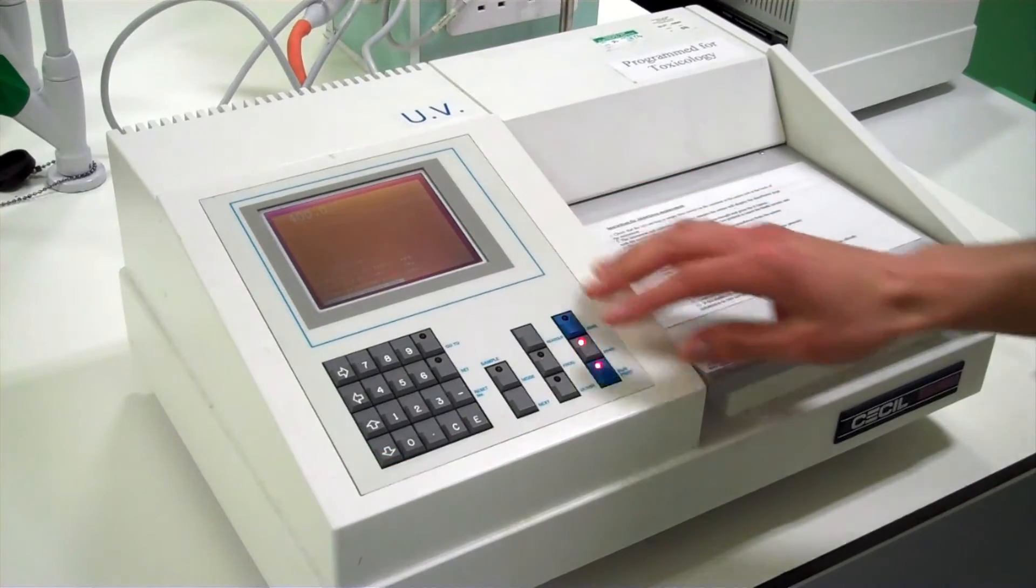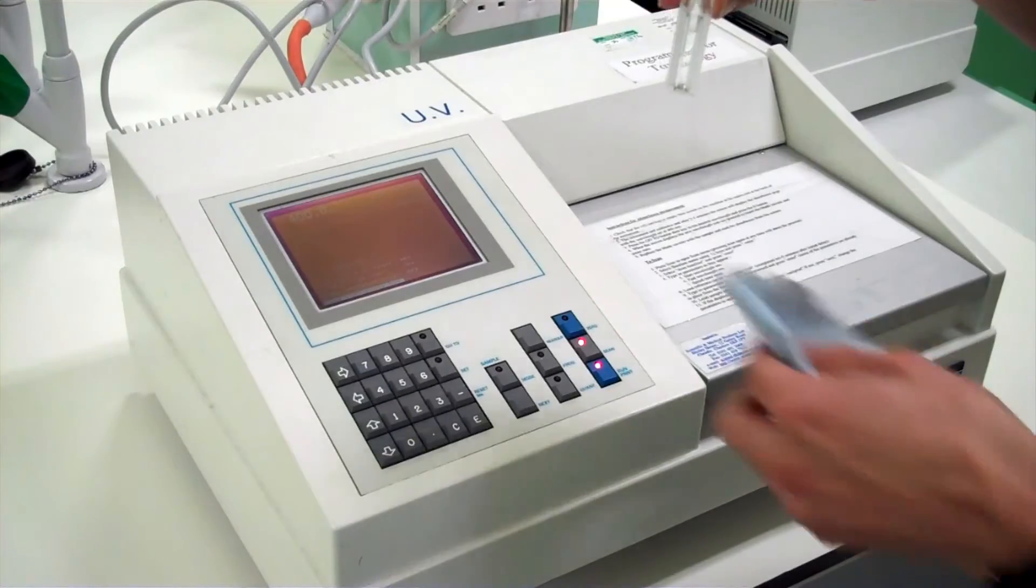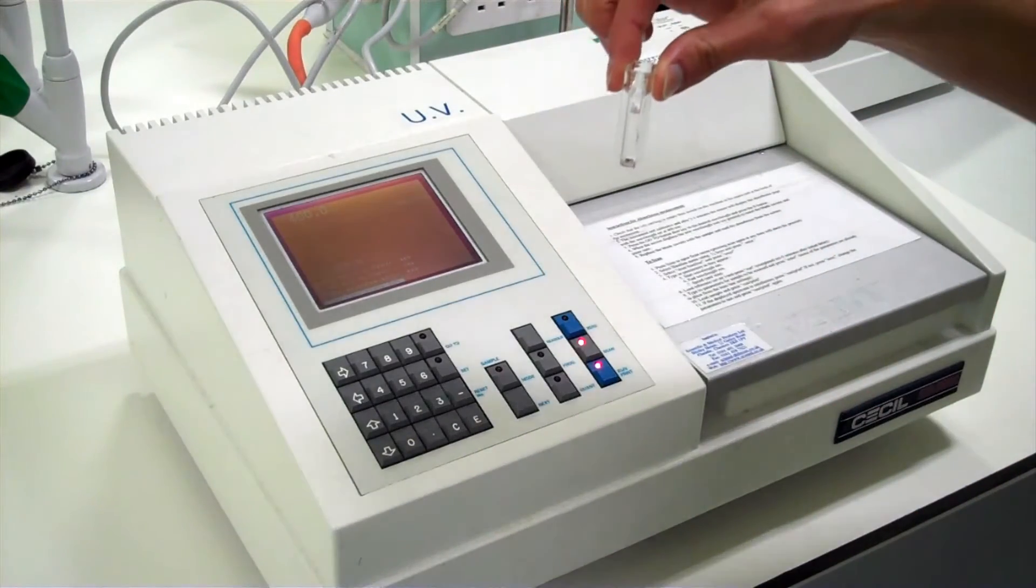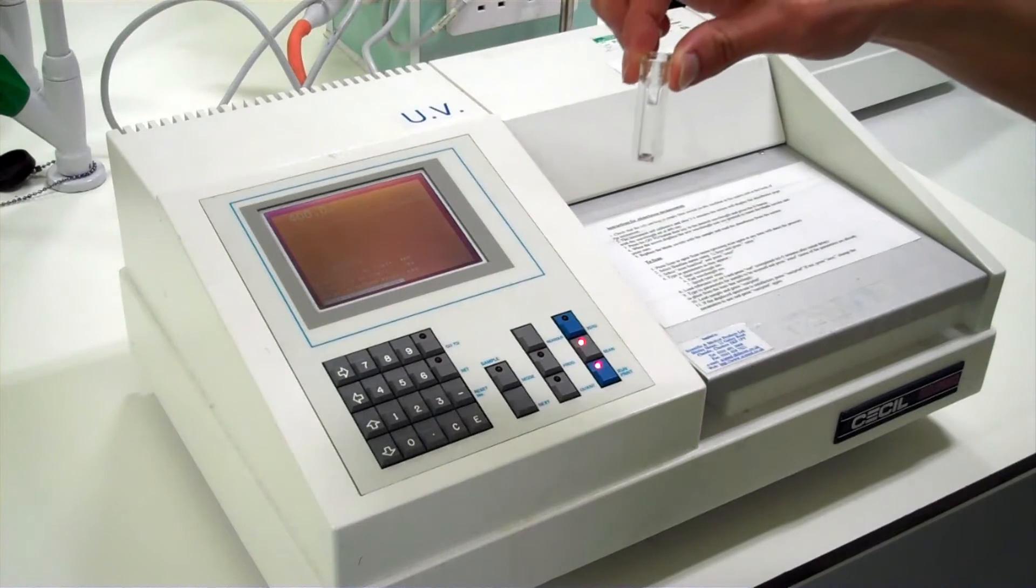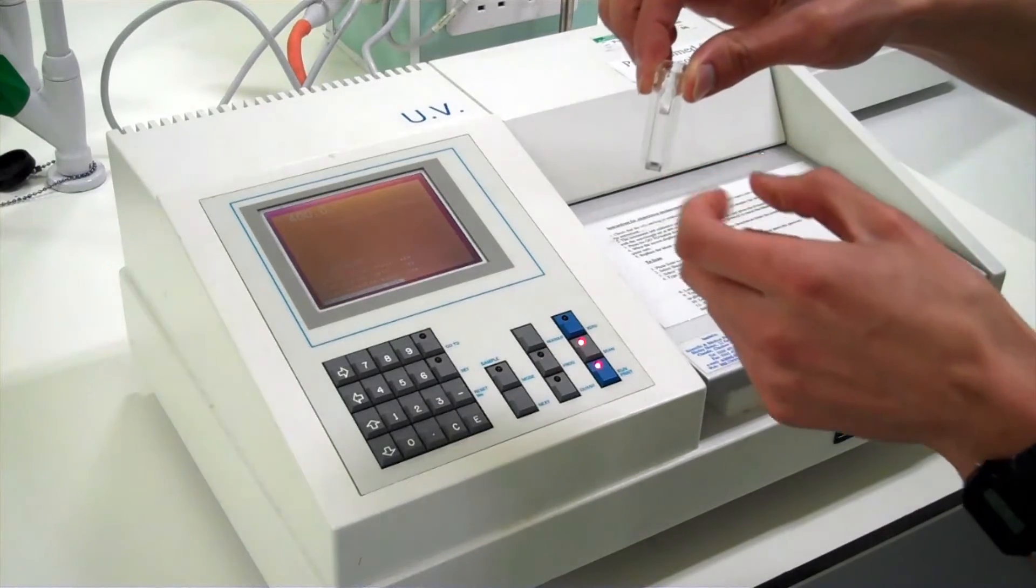We can then load the blank. But before we do make sure there are no fingerprints on the outside of the cuvette which may reflect or absorb light. Because of this it is good practice to hold it from the top and not the sides. Gently tap or flick the cuvette to get rid of any air bubbles which may scatter light.